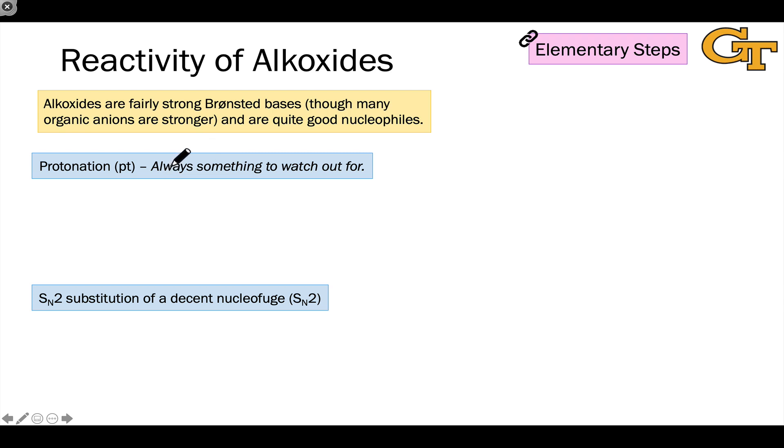Let's move to alkoxides now, which are the conjugate bases of alcohols. These are fairly strong Bronsted bases, sort of in the middle of the grand spectrum of organic bases, and they're quite good nucleophiles. Essentially, they're amped up alcohols with the negative charge.